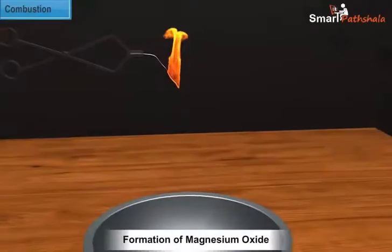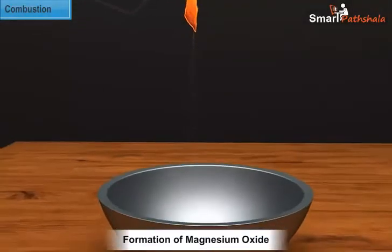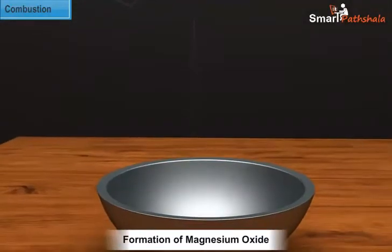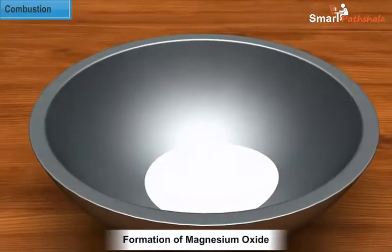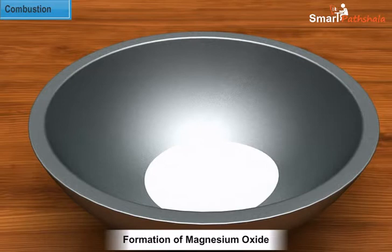As we learnt in the previous lesson on metals and non-metals, burning a magnesium ribbon leads to the formation of magnesium oxide; heat and light are also produced in this process. Combustion is said to be a chemical process as a new substance is formed as a result of the process.